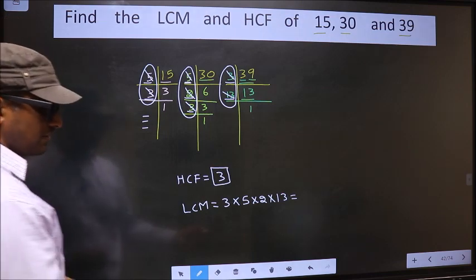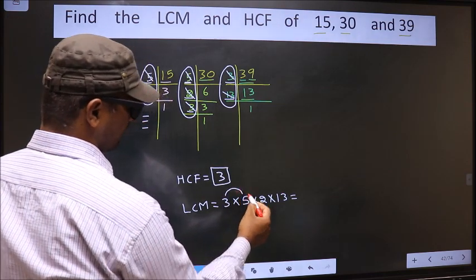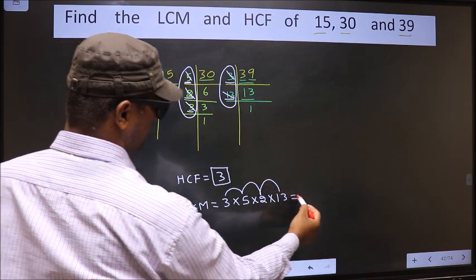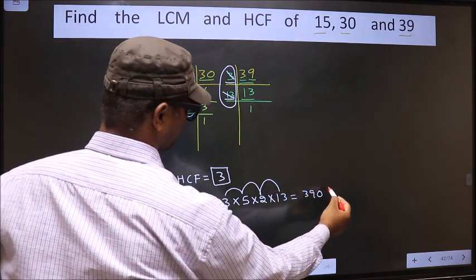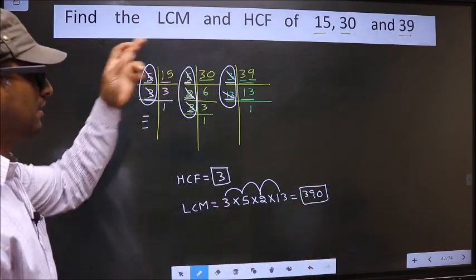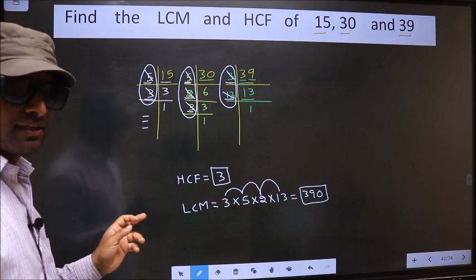So our LCM is 3 into 5, 15, into 2, 30, into 13, 390 is our LCM. Am I clear?